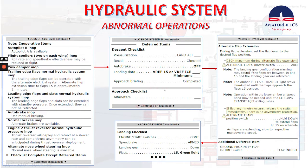Complete the approach checklist, then we have to do the alternate flap extension. During flap extension, set the flap lever to the desired flap position. Remember: 230 knots maximum during alternate flap extension. Alternate flap master switch — arm. Note: the landing gear configuration warning may sound if the flaps are between 10 and 15 and the landing gear are retracted. So we usually select flaps 10, put the gear down, and then continue to flap 15 to avoid the landing gear configuration warning.